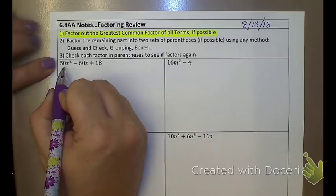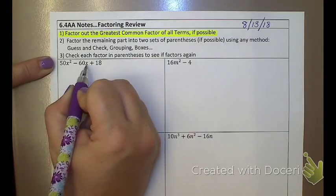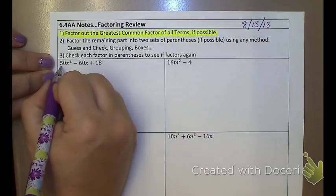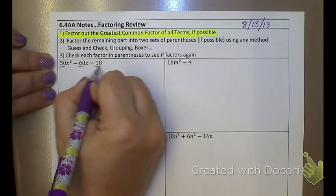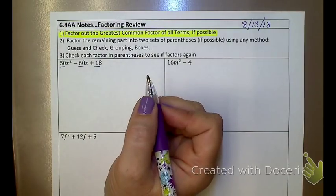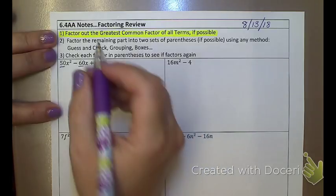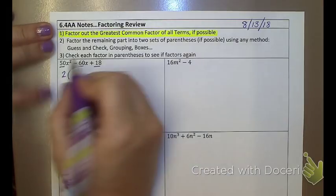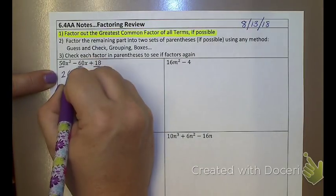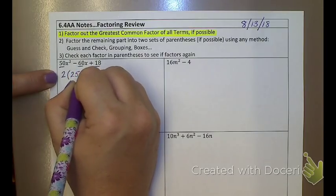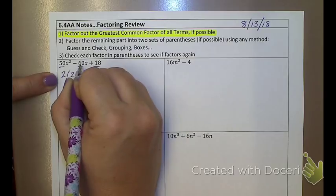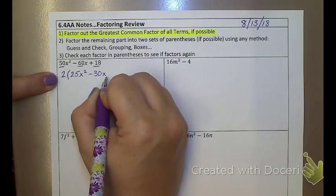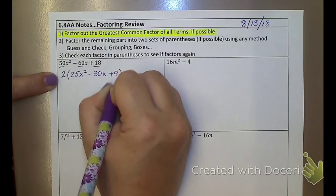So if I look at my first example here, I notice that only two of the terms have an x, so I can't take out an x because all three terms do not have that in common. If I look at 50, negative 60, and positive 18, I can see that they all are even, so they all at least have a 2. So if I take out a 2, what do I have left inside? 2 times what is 50x squared? That would be 25x squared. 2 times what is negative 60x? That would be negative 30x. And 2 times what is positive 18? That would be positive 9.